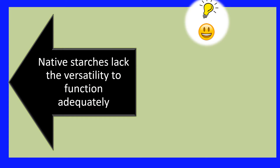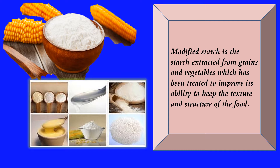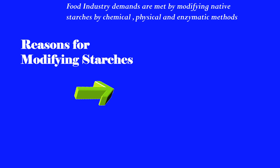We will be discussing all these techniques in a bird's eye view. Native starches lack the versatility to function adequately, hence the need for modified starches, because these tolerate a wide range of processing techniques. Today, food industry demands are met by modifying native starches by chemical, physical, and enzymatic methods.